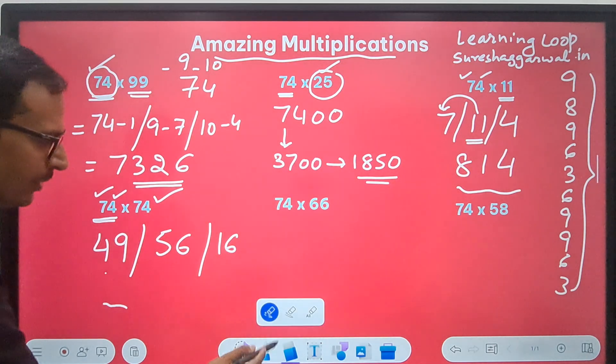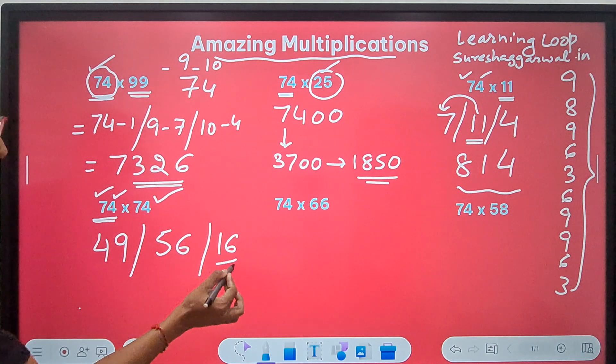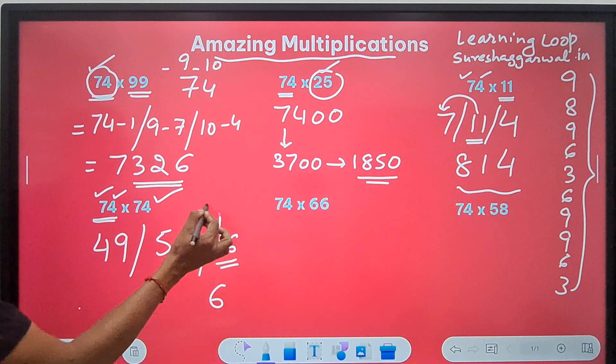And then, next step has the magic. What do I do in the next step? I will take up unit digit from here. Carry forward the 10th digit. So, 56 plus 1 is 57.